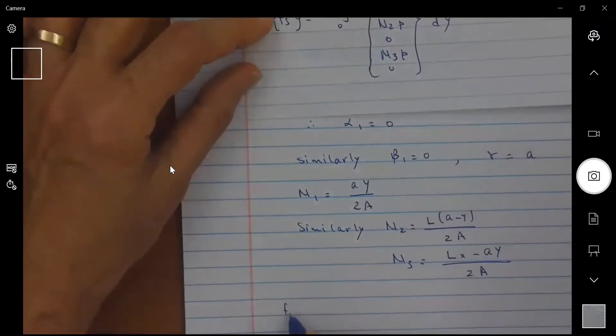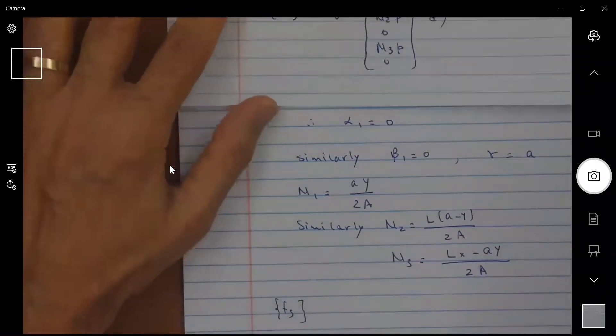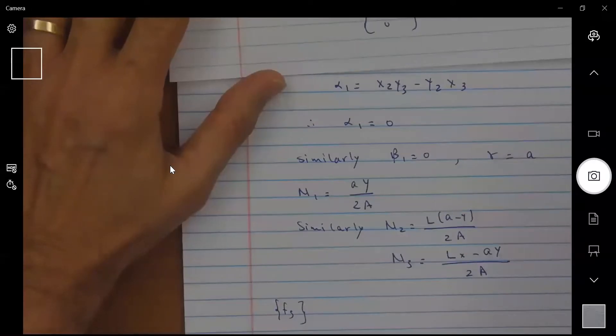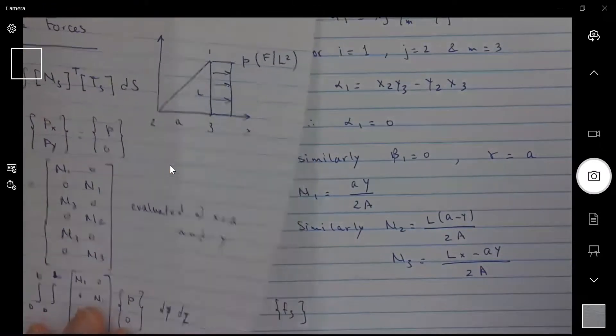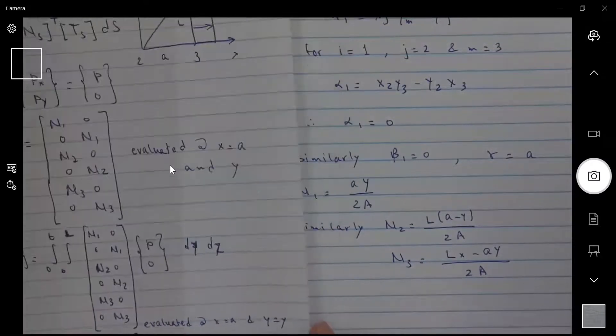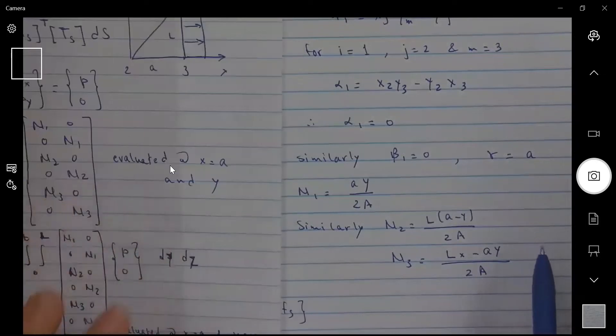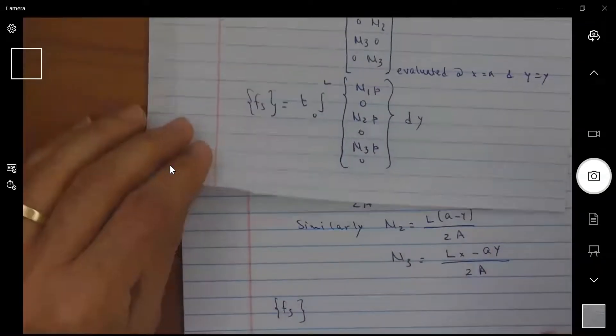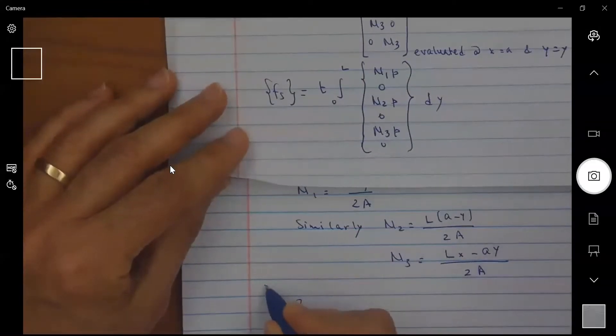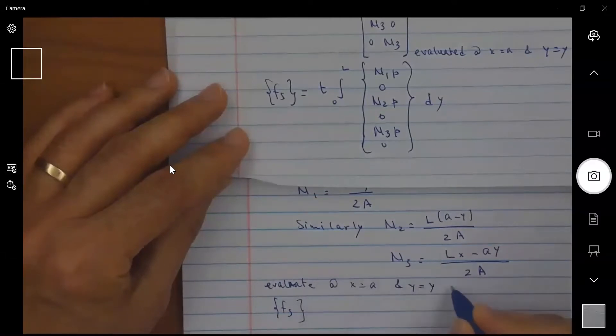If I come back to FS and evaluate this shape function for X equals to A and Y equals to Y and integrate with respect to Y, so evaluate at X equal A and Y equal Y and integrate with respect to Y.